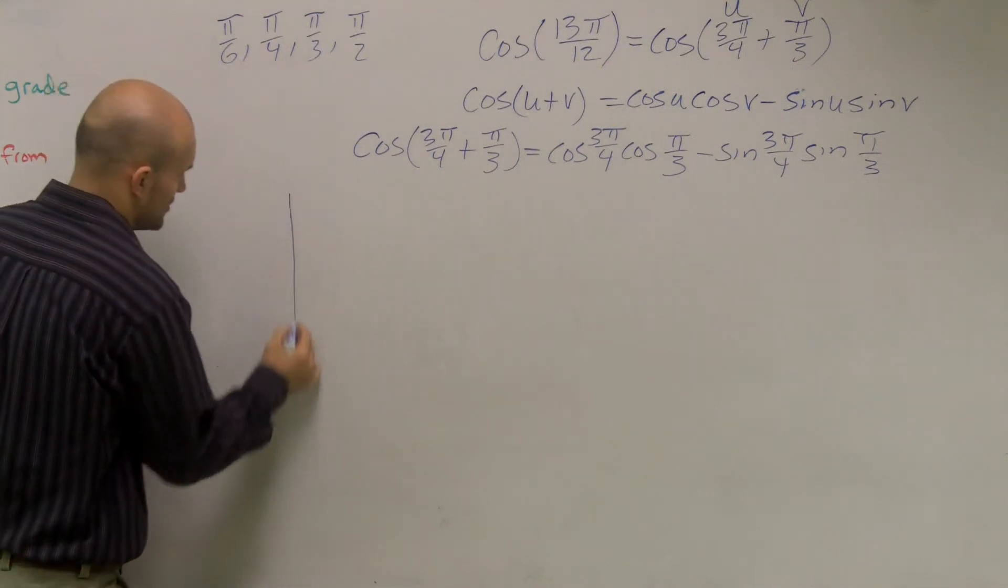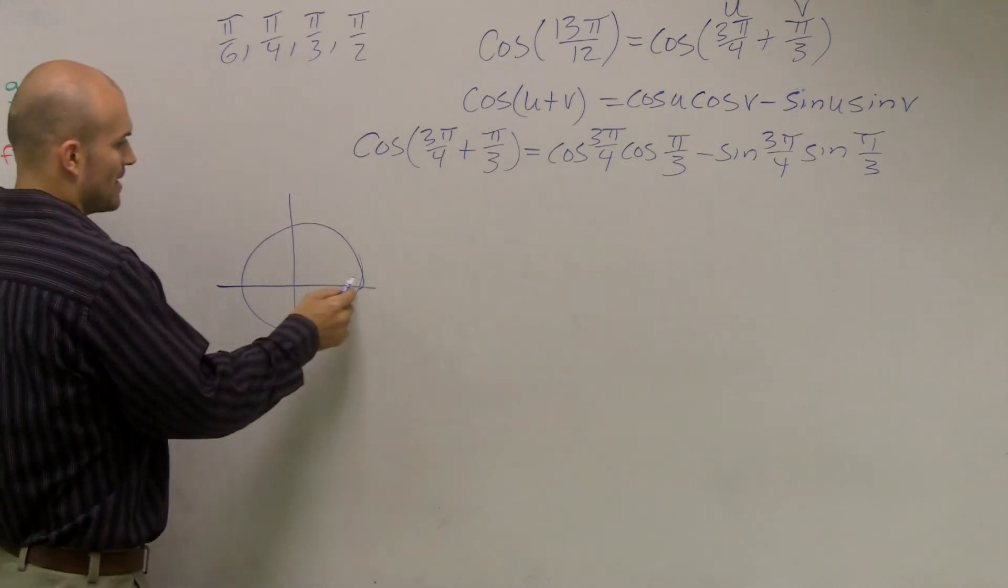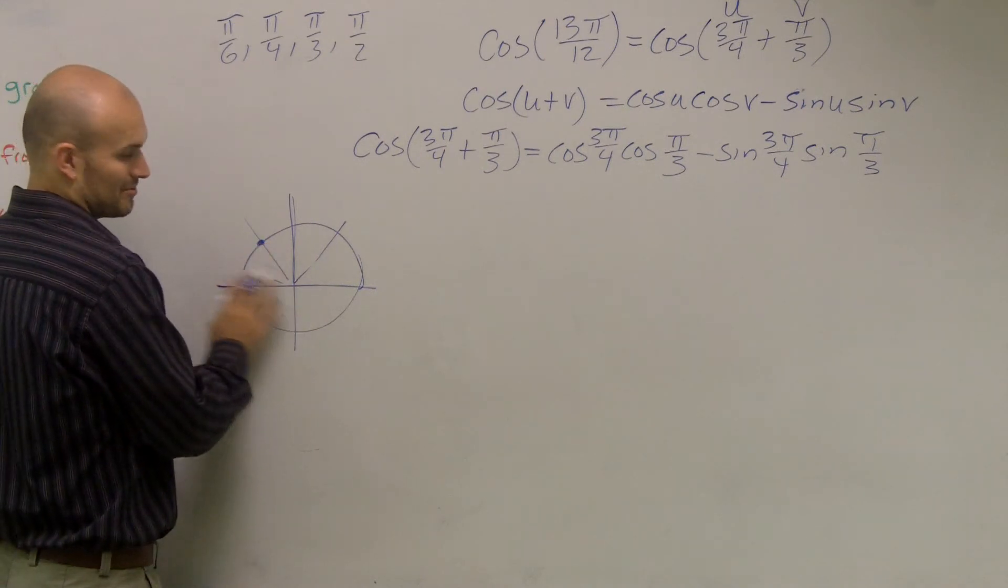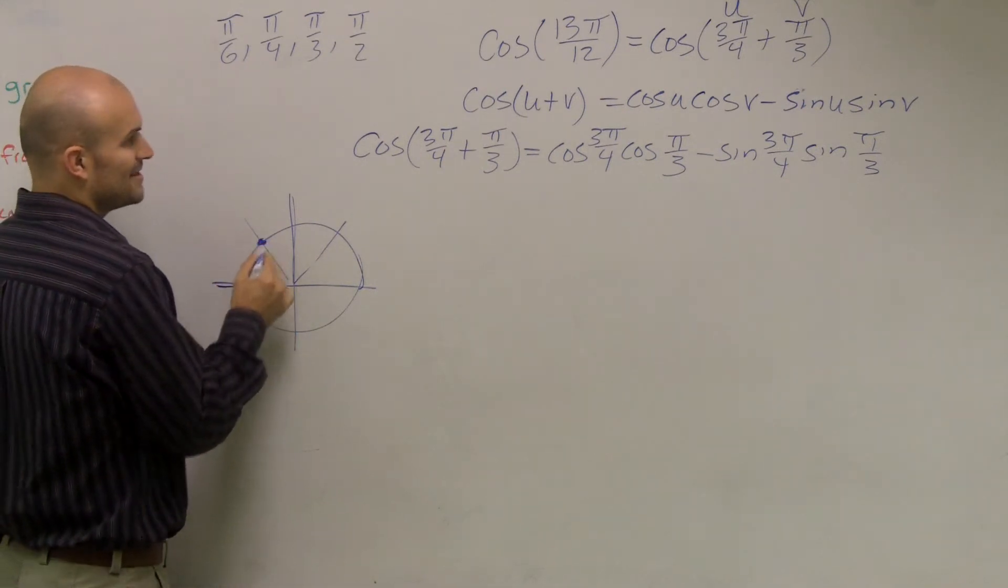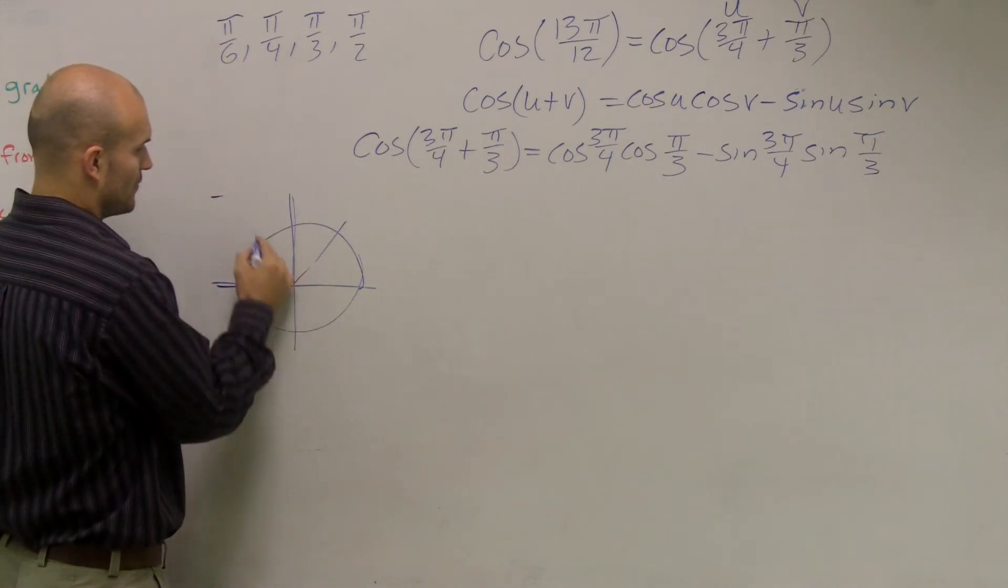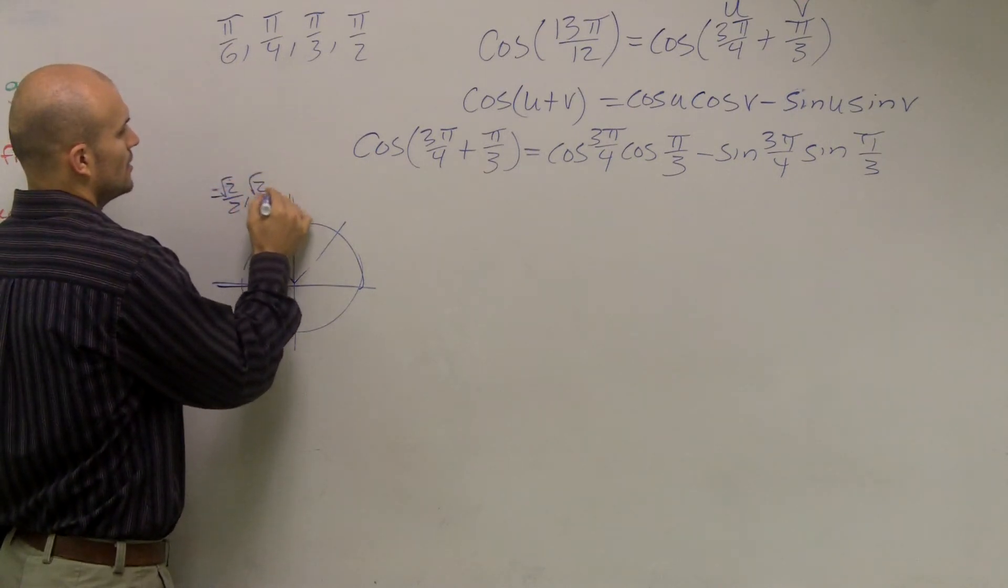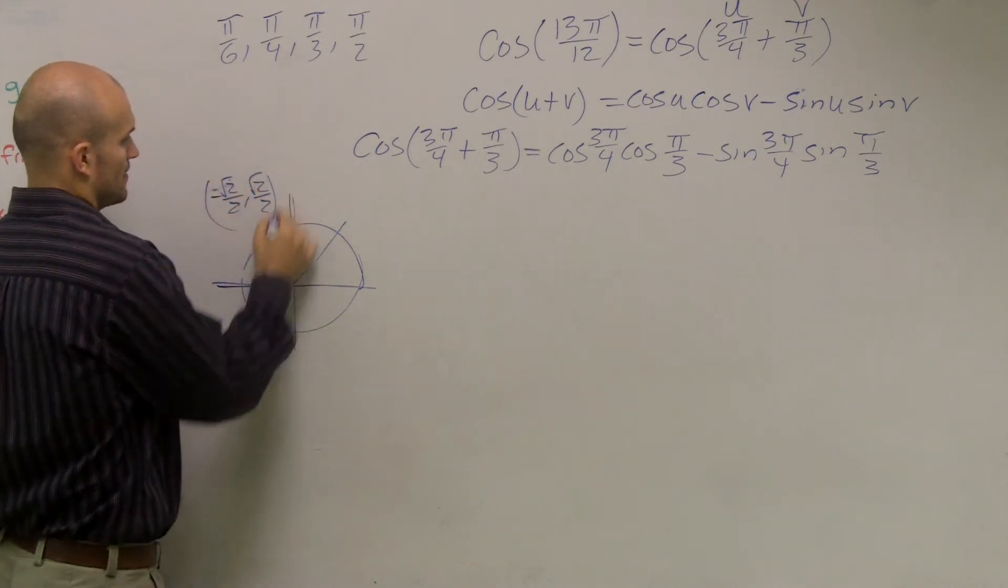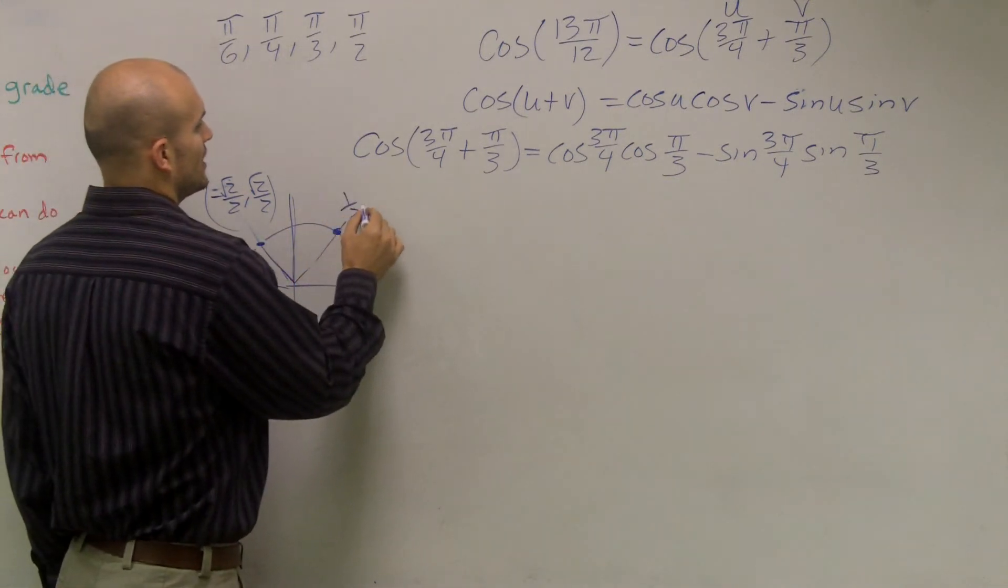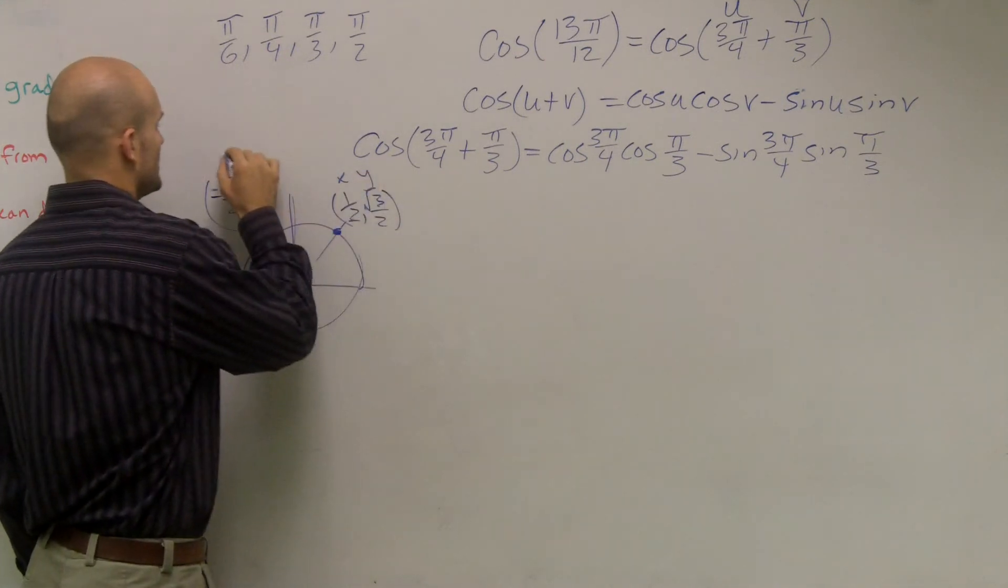So I take a look at my unit circle and say, alright, where are those points and what are their values? First of all, 3π/4, 1, 2, 3, 4, that's horrible, 3π/4 is right here, so this point is going to be, oh jeez, 3π/4, yeah, OK. So that's negative √2/2 comma √2/2, right, that's 3π/4, and then π/3 is going to be 1/2, √3/2. And remember, those are your x and y coordinates.